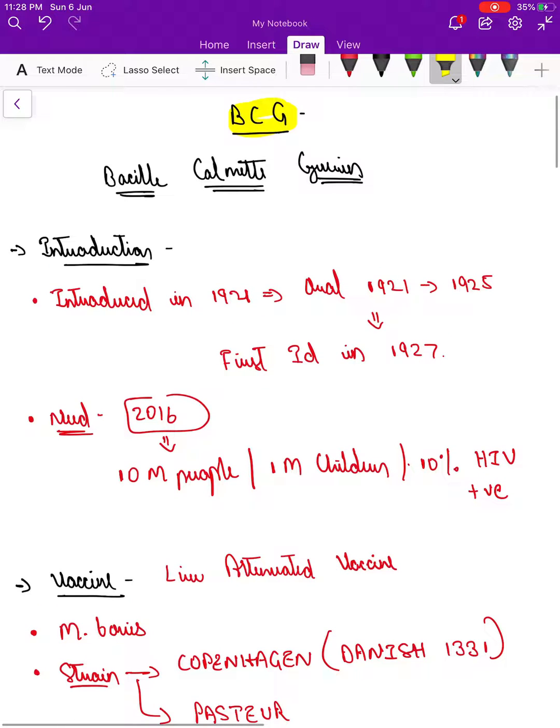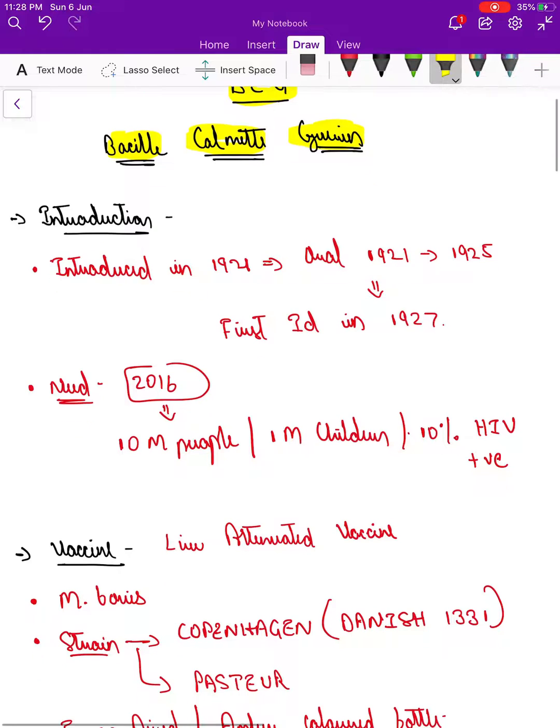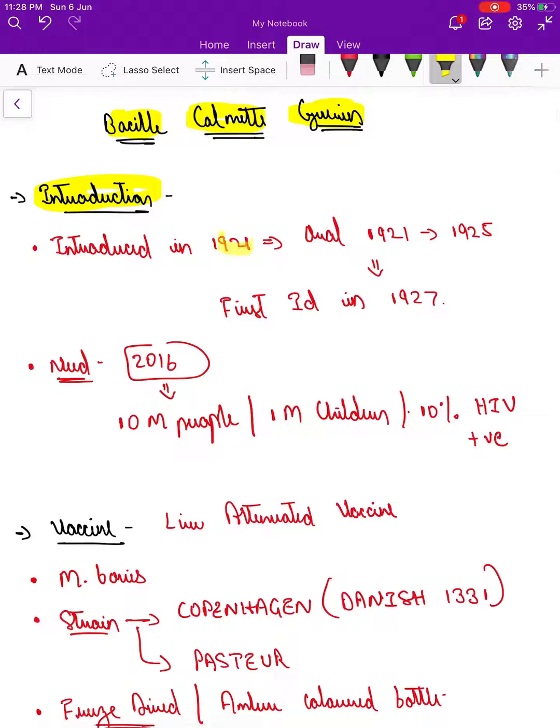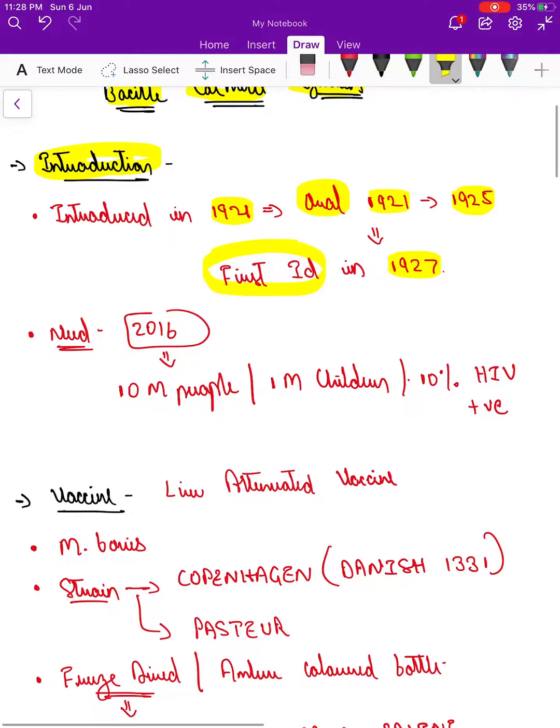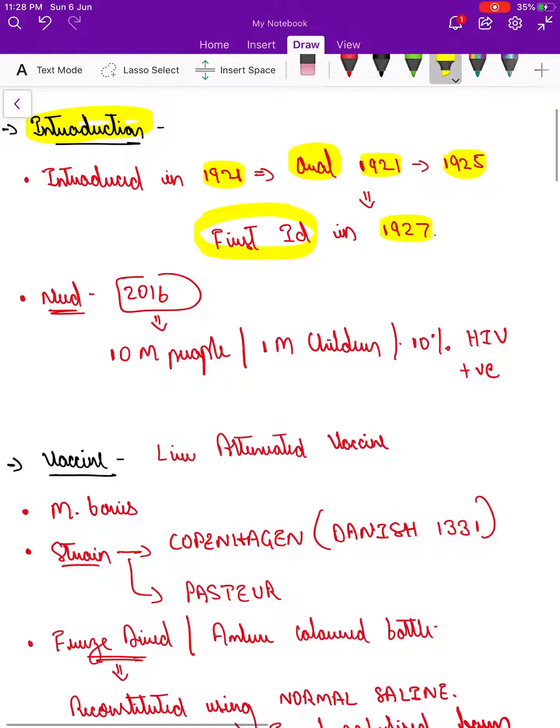What does BCG stand for? Bacille Calmette-Guérin. Let's talk about introduction. This vaccine was introduced in 1921. Initially, it was given as oral vaccine from 1921 to 1925, and later in 1927 it was first administered as intradermal, which is being followed at present.